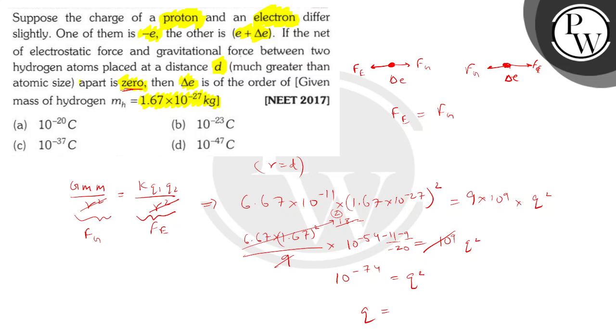So, Q will be of the order of... So, this is 2 × Q². Almost 2. This is a rough value. So, Q will almost be equal to √2 × 10^(-74/2). So, this 74/2 comes out to be approximately √2 × 10^-37. So, we have this value.